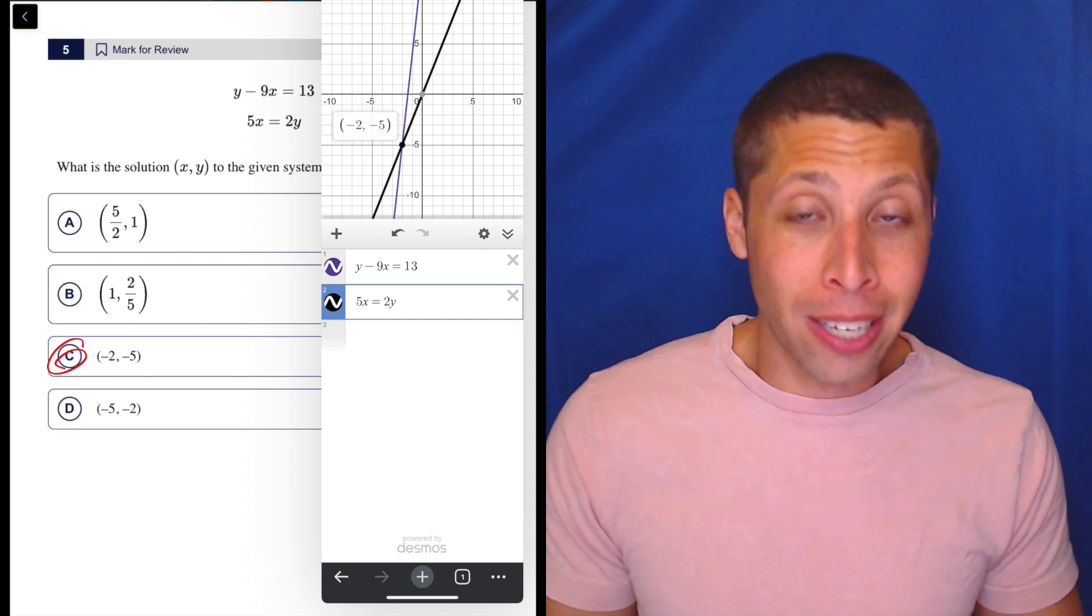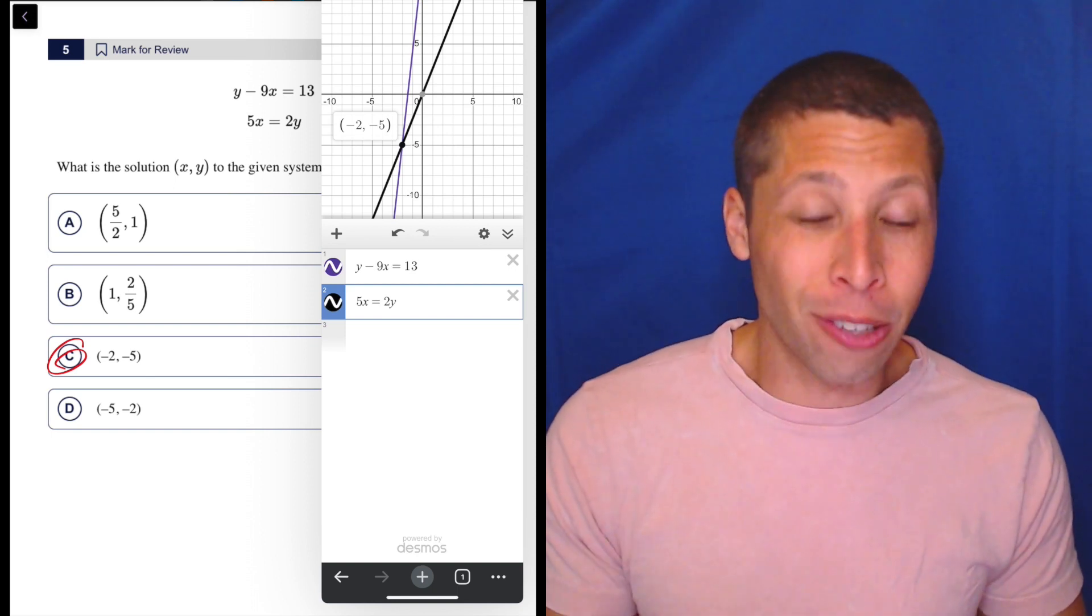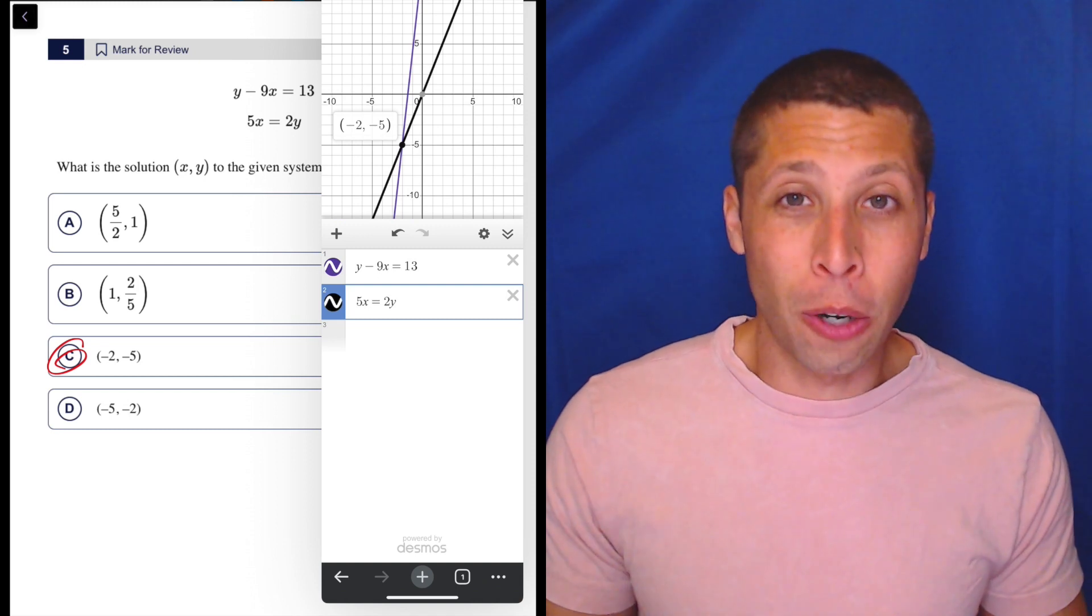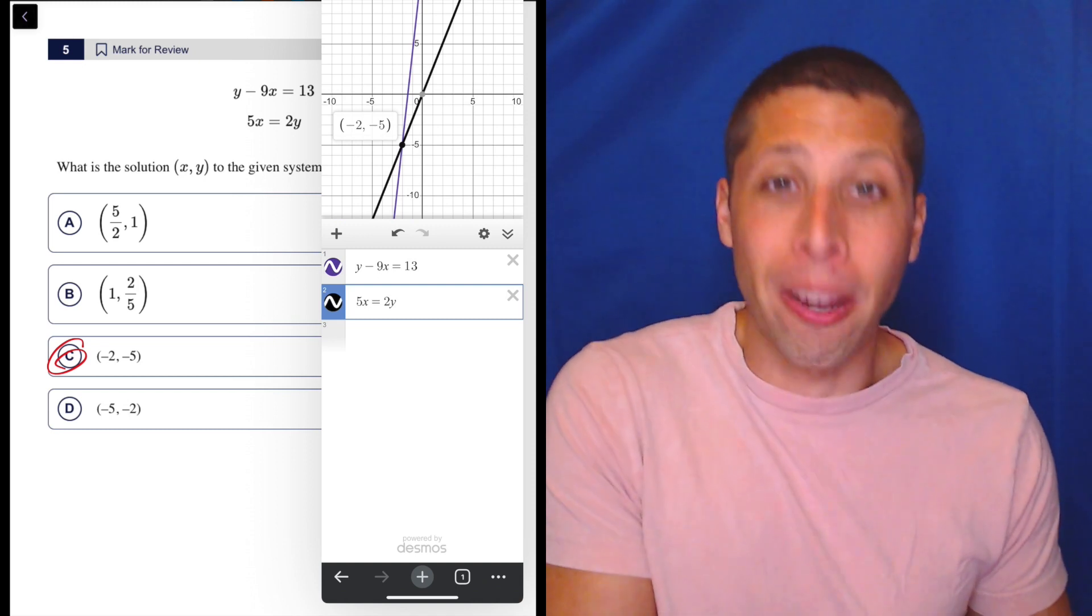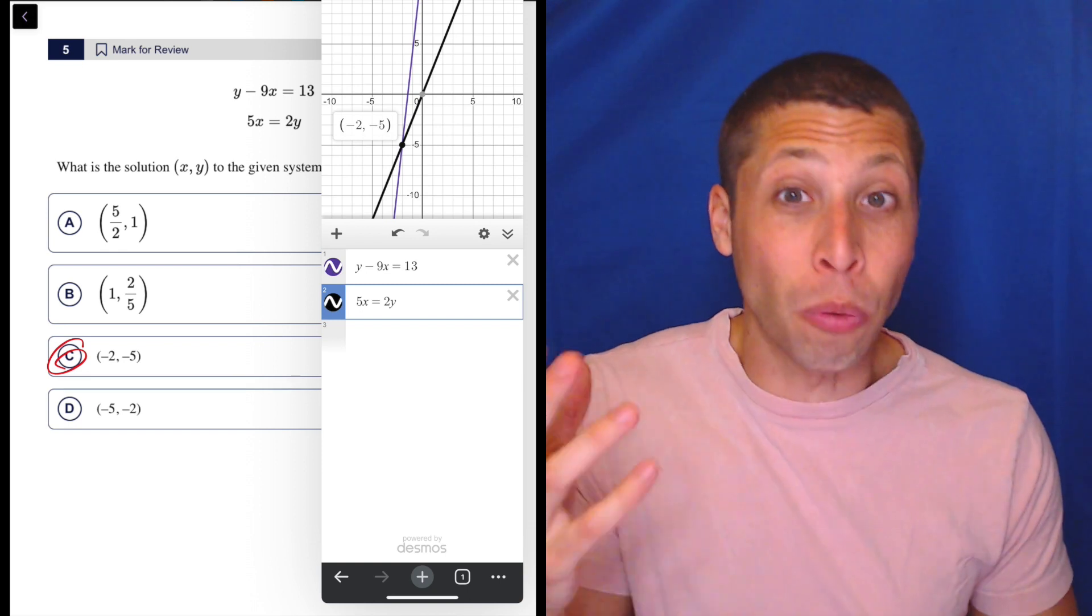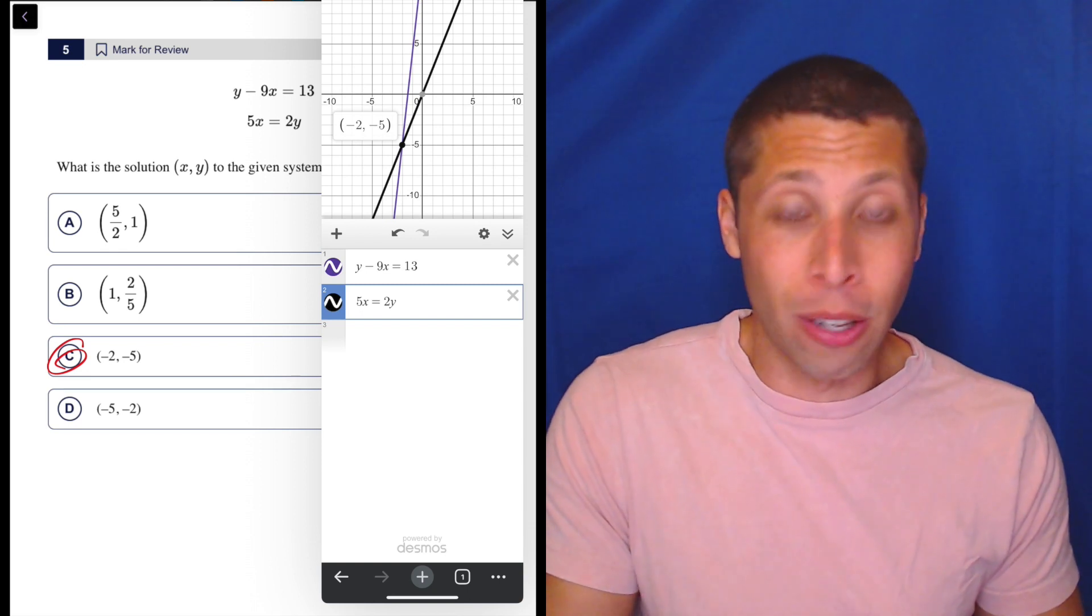But if we just plug it into Desmos, as long as we enter it correctly, there's really no way we'd get this wrong. So why not just go with the sure thing? Maybe it's a few extra seconds if you're really fast in algebra, but I don't know, it's totally worth it.